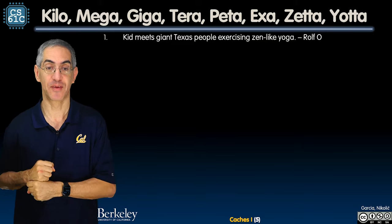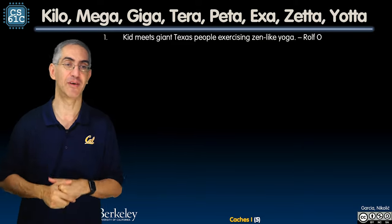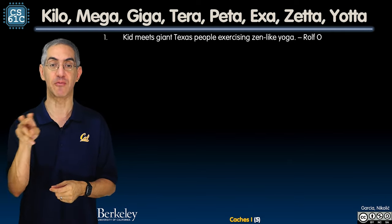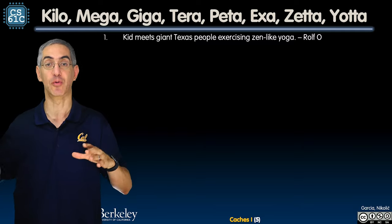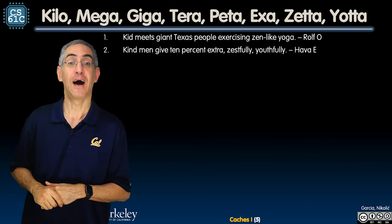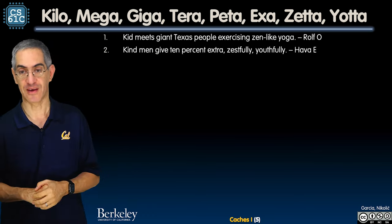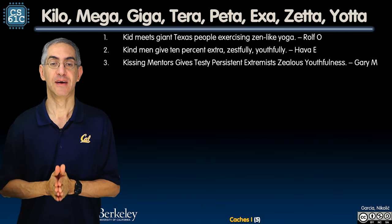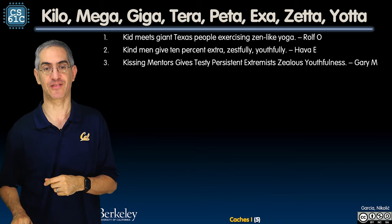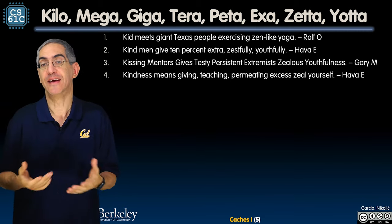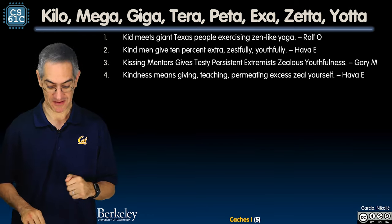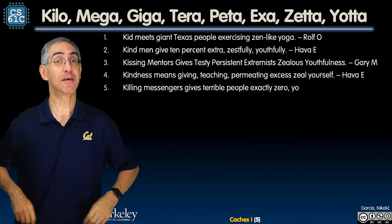Another mnemonic: 'Kind Men Give Ten Extra Zestfully Youthfully.' And another: 'Kissing Mentors Gives Testy Persistent Extremists Zealous Youthfulness.' Or: 'Kindness Means Giving Teaching Permeating Excess Zeal Yourself.' The key is that the first two letters of each word in the mnemonic must match the prefix sequence.